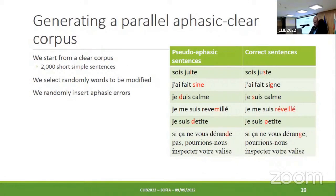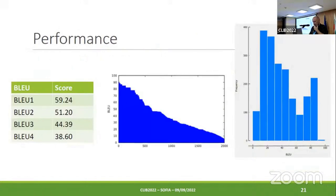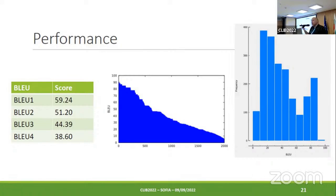For the machine translation experiments, we generate a parallel corpus using all this method, and we use classical machine translation systems to translate sentences with aphasic errors into correct sentences. This leads to debatable results, because the word order is respected, so performance should be very high. Actually, the performance is not so high — you can focus on the blue curve — only 60% of the correct words are present in the output of the system.